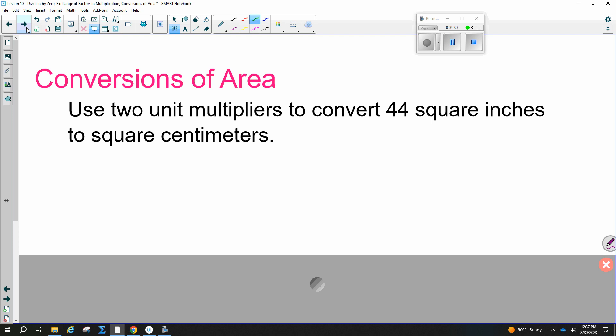Now we did just unit multipliers for, like, single lengths. Now what if we have area? So I have centimeters squared or inches squared. Use two unit multipliers to convert 44 square inches to square centimeters. So we're going to start with this, 44 square inches. And you need to write that like this, inches squared. So square inches means inches squared. And then you put it over one.